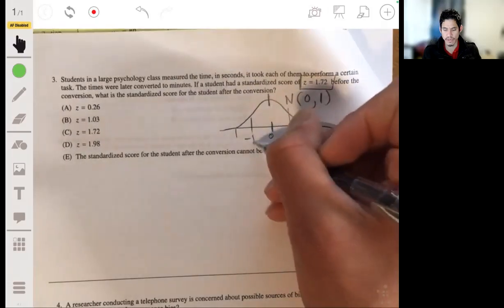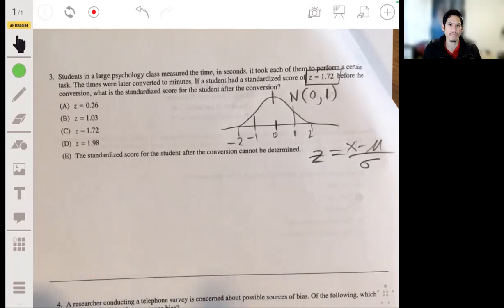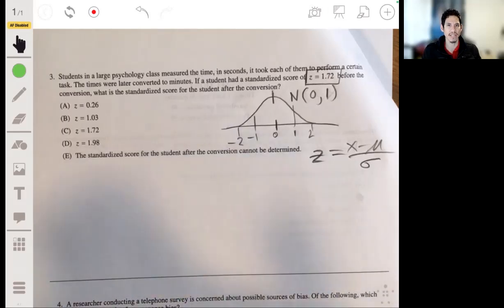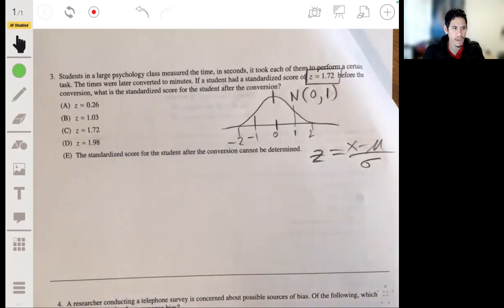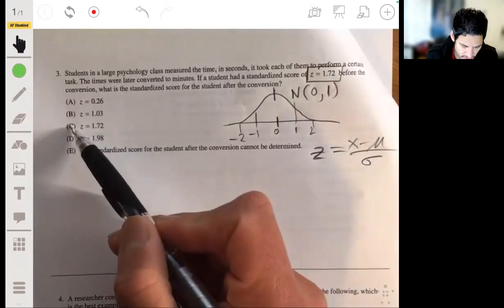1, 2, negative 1, negative 2. So it's falling from the 68, 95, 99.7. So it's going to be the same thing.